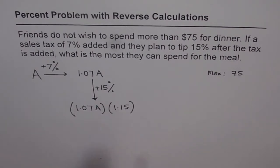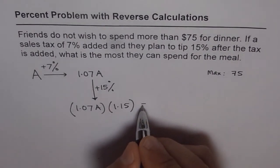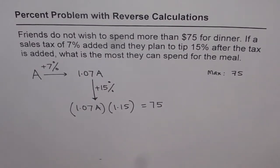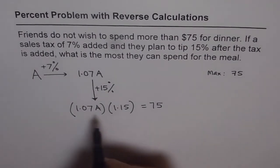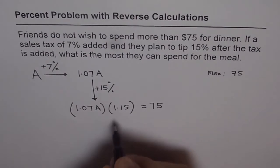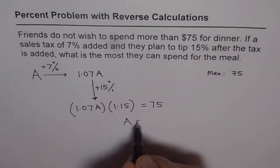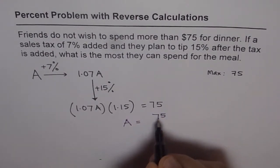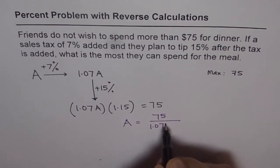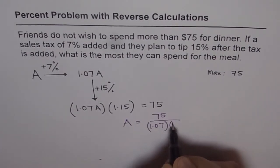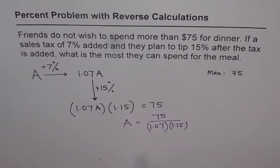This total should equal the maximum of $175. So we get the equation: 1.07A times 1.15 equals 175. Now, to find A, just divide 175 by these two numbers. So A equals 175 divided by 1.07 times 1.15.